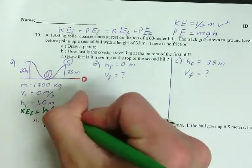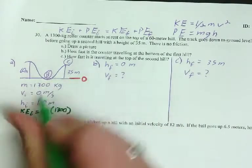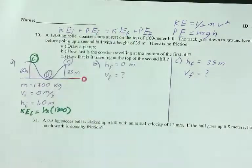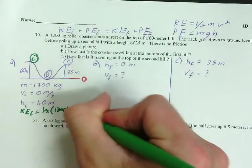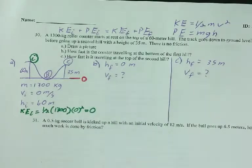So one-half times mass, which is 1300, times velocity squared. The velocity at the beginning, so this is my initial, is zero. And yes, you can get a value of zero. Totally fine. Not a problem. Absolutely works. So that's KE_i.